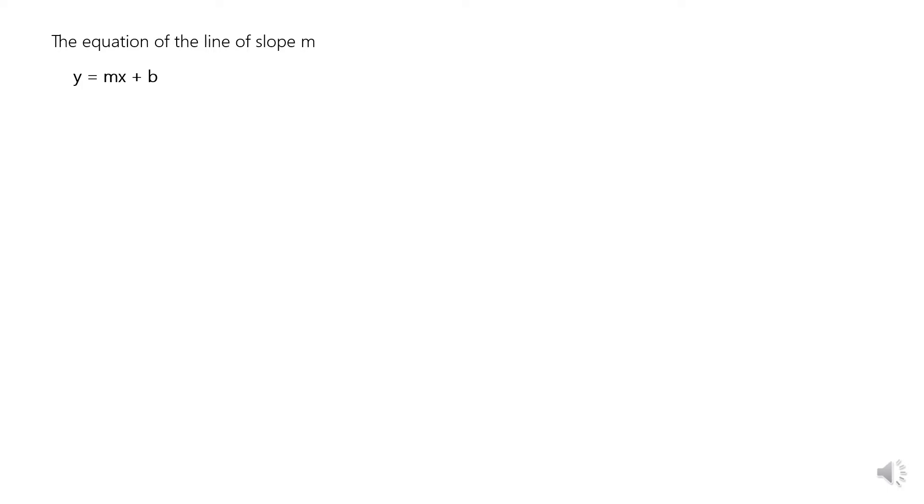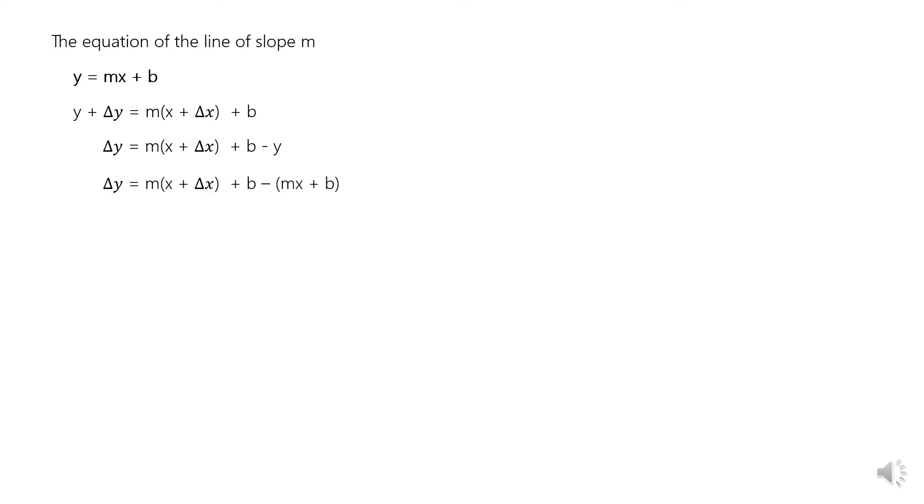To verify that the slope of the line is also the slope of the curve, from the equation of the line with slope m: y = mx + b. To determine the slope or the derivative using the increment method, replace y with y plus Δy and x with x plus Δx. Then solve for Δy by transposing y to the right side of the equation so it becomes negative, and substitute the value of y which is equal to mx + b.